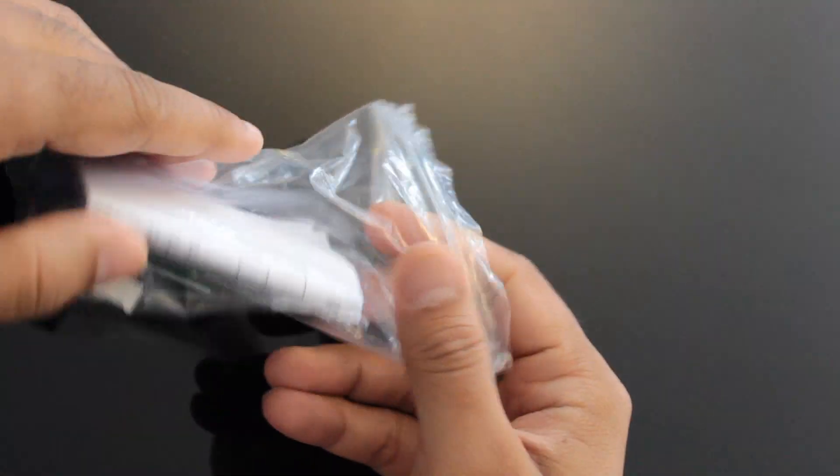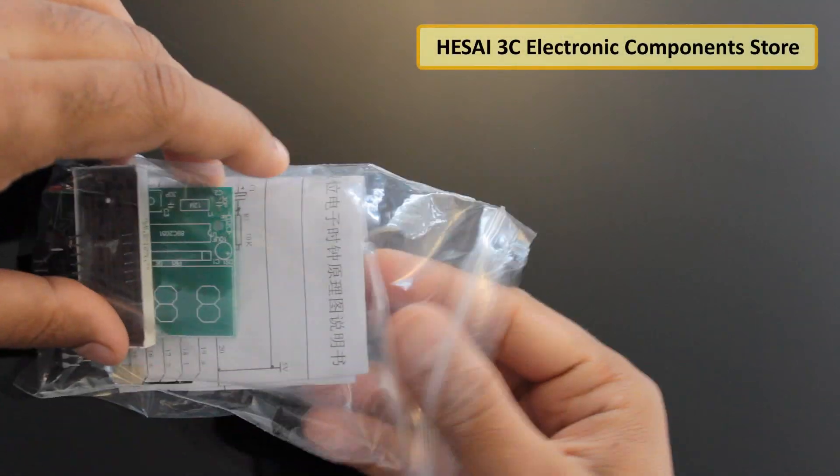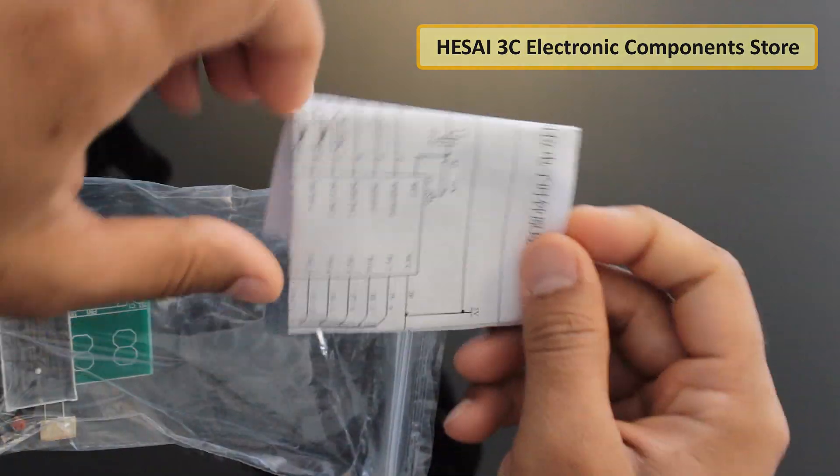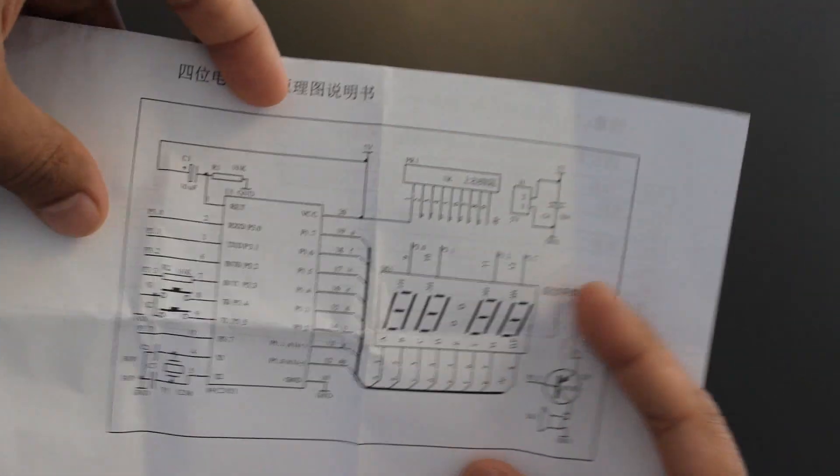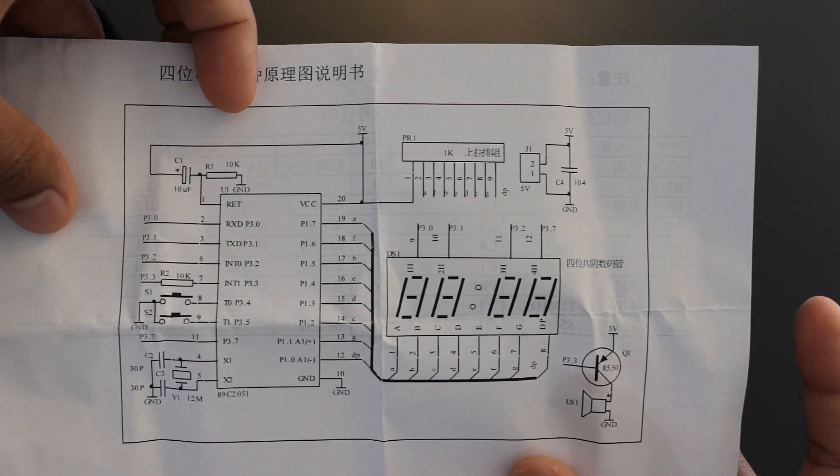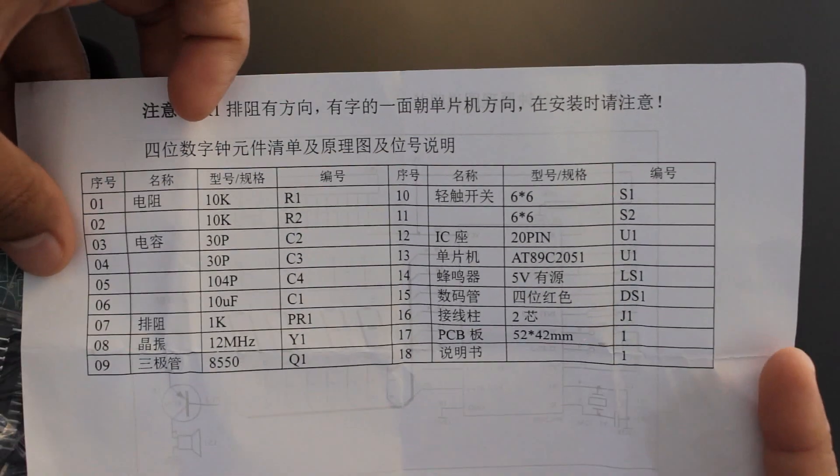I bought this DIY kit from Hisai 3C Electronic Components store from AliExpress for just $2.40. I've provided the store's link in the description below. The packaging was good and the item was delivered to me in just 15 days.